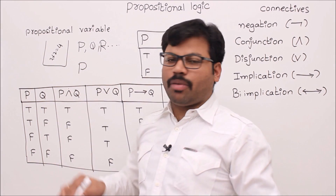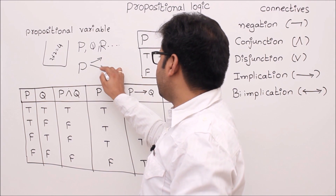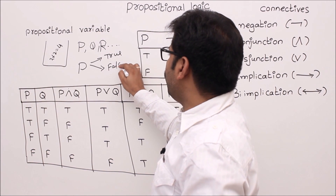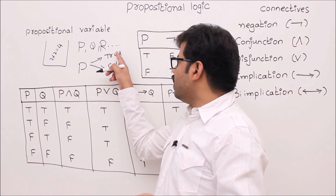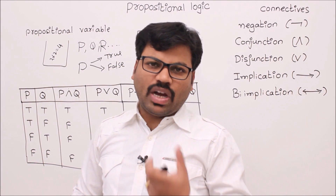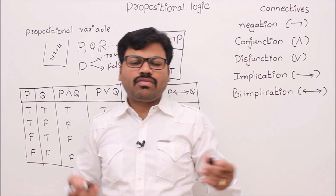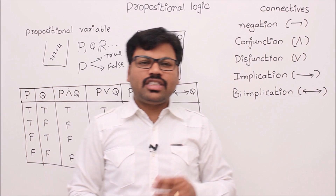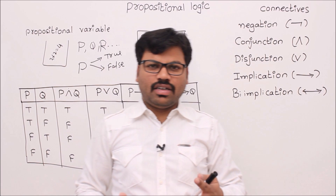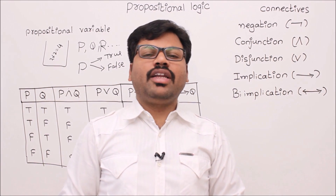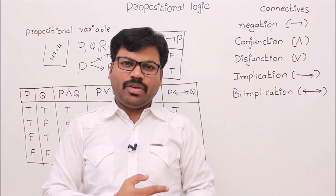If you ask the truth value of propositional variable p without telling me what is inside it, I can't say the truth value — I just consider possibilities: one possibility is true, one is false. Since every propositional variable contains some proposition, its value is either true or false. Connectives are operators. In every mathematical system there are objects and operators — for example, the number system has numbers as objects and addition, subtraction, multiplication as operators. Similarly, propositional logic is a mathematical system where objects are propositional variables and operators are connectives.